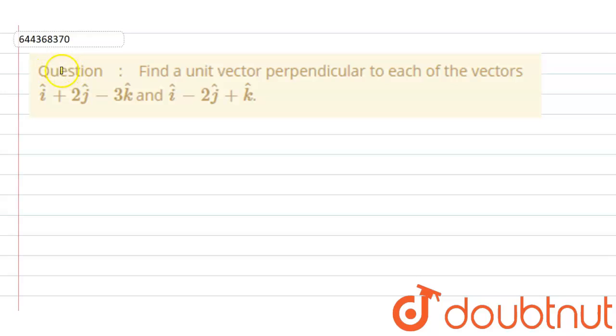Hello student, so the question is find a unit vector perpendicular to each of the vectors i cap plus 2 j cap minus 3 k cap and i cap minus 2 j cap plus k cap. So this question is based on the chapter vectors.